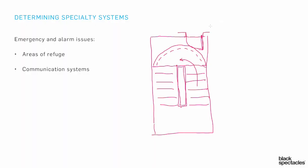Now, the area of refuge: imagine somebody coming in a wheelchair, rolling in and kind of sitting there waiting for somebody to come and get them. The person is trying to be out of the way, but they're right in the way of all the folks trying to travel around and get out. So the area of refuge wants to be outside of that travel path.